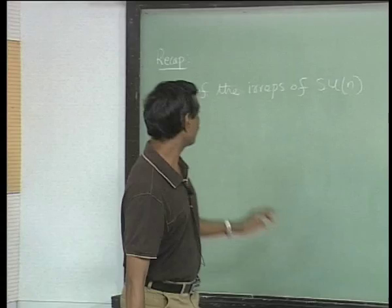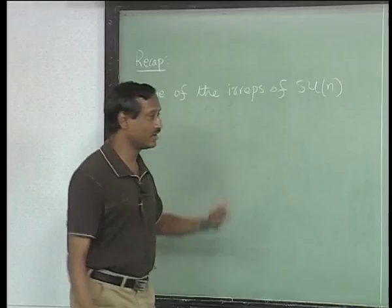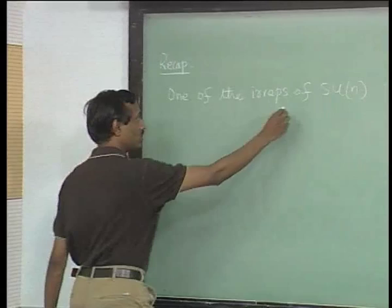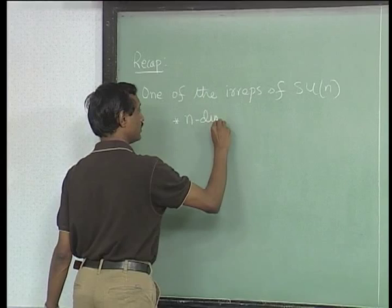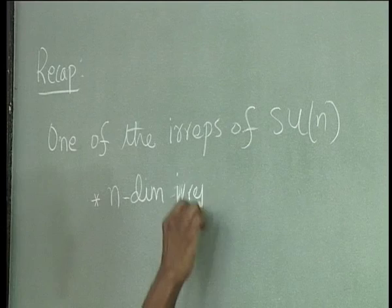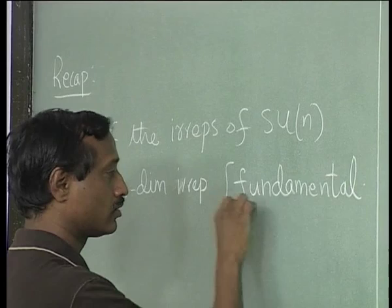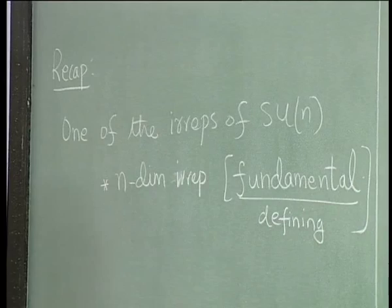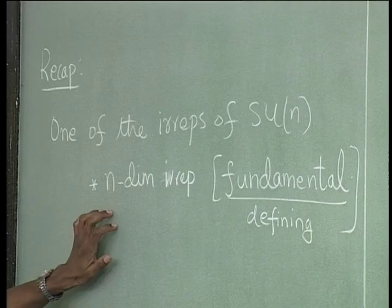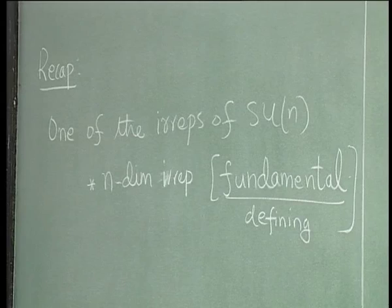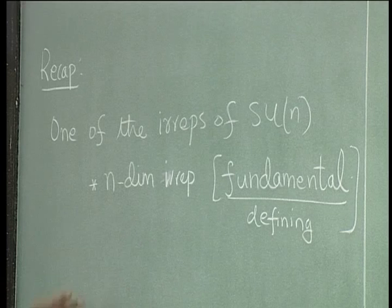So that was the definition. We saw that there is an n-dimensional representation which we called the fundamental, or we can even call it the defining representation - fundamental is the more common usage. But we also saw that SU(N) for generic n other than n equal to 2 has another n-dimensional representation which is not equivalent to this - the complex conjugate of that. So we also got n-star or n-bar.